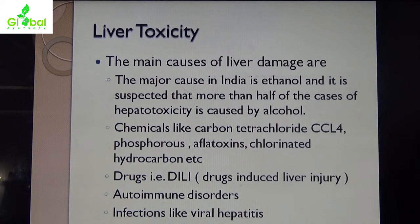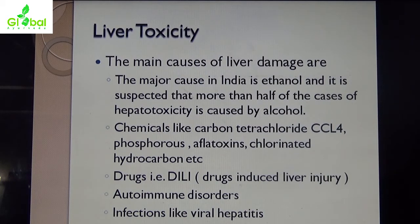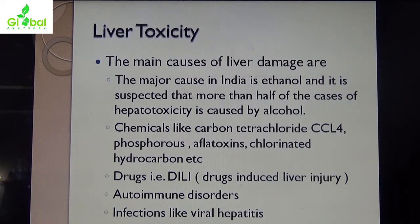Aflatoxins are present in many foodstuffs like peanuts and other products which grow underground, like potatoes. These aflatoxins cause liver damage. Drugs causing DILI — drug-induced liver injury — include antitubercular drugs, higher antibiotics, and many steroids. Some autoimmune disorders also cause liver damage. Infections like viral hepatitis, hepatitis A and B, also cause liver toxicity.